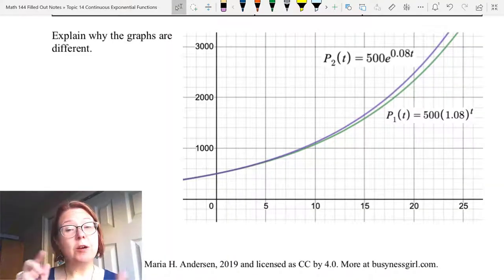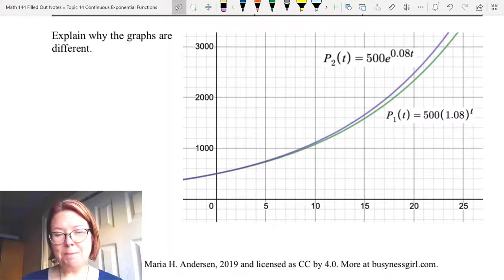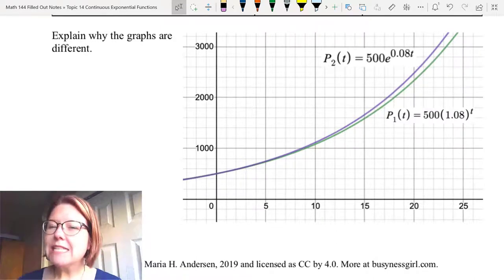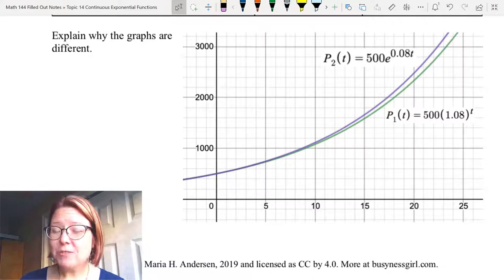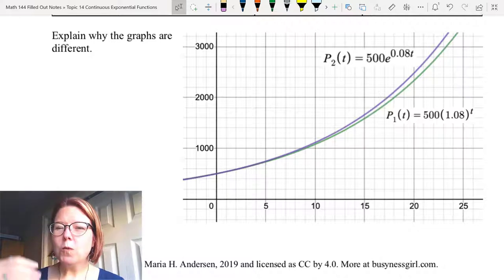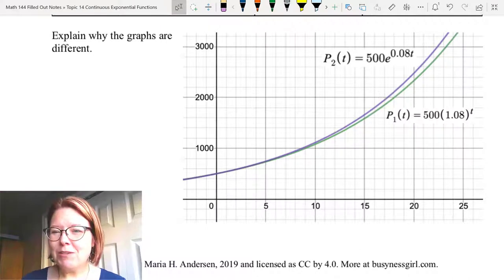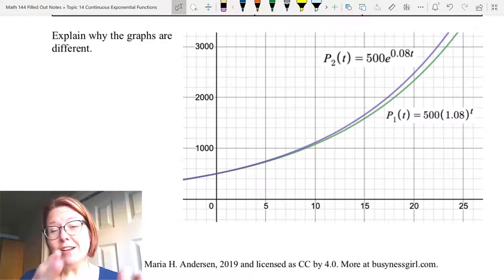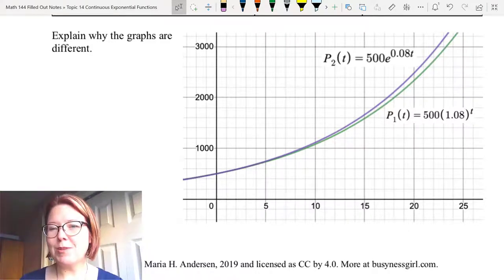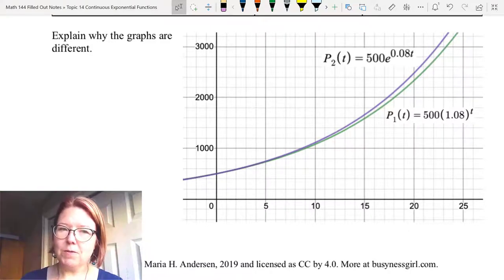If we graph these two functions, they are both exponential. They both have a y-intercept of 500. They both are growth curves. But one grows slightly faster than the other when we're looking at positive time values. The one that grows faster is the model with continuous exponential growth, because we're compounding the growth more often than with the discrete model. The discrete model basically does one compounding a year. With continuous models, we're calculating the growth all the time.